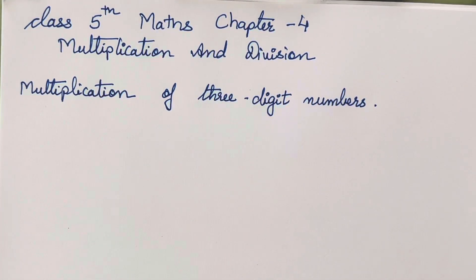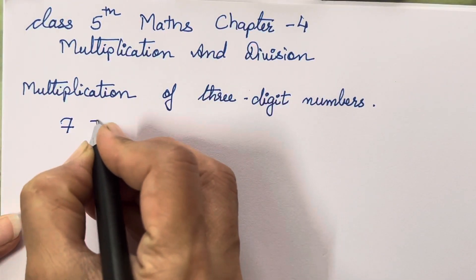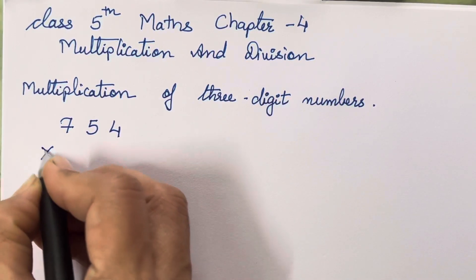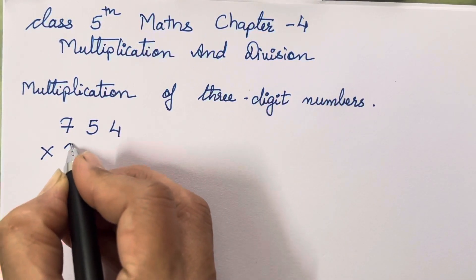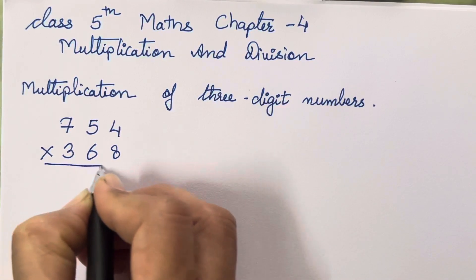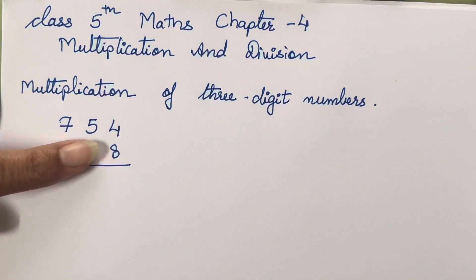So 7, 5, and 4 — multiply. This is the three digit number. You have to multiply it with another three digit number. So 754 multiplied with 368. First, what you have to do is multiply this above number with the units digit number, that is 754 multiplied with 8.